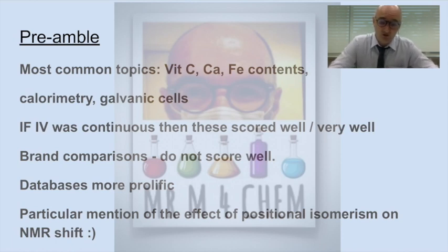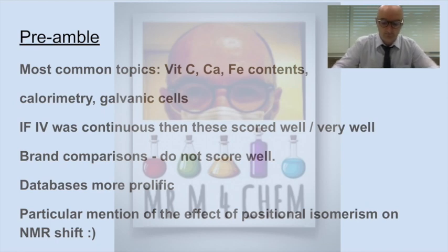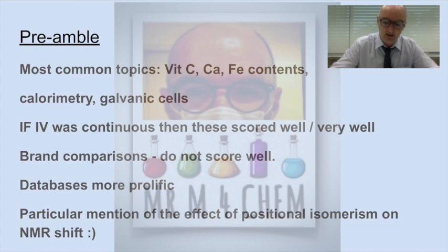So if the independent variable was continuous — i.e., we could measure it and plot a graph from the results — then something like that with some error bars on there would score very well. If you then use your ruler and plotted a gradient of that line, did your rise over your run, that's brilliant. We really like that.